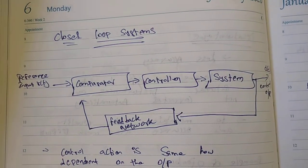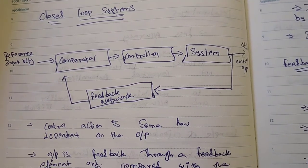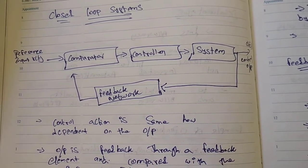There is a closed loop control system. There is a reference, comparator, controller system. There is an output. You can connect with feedback.